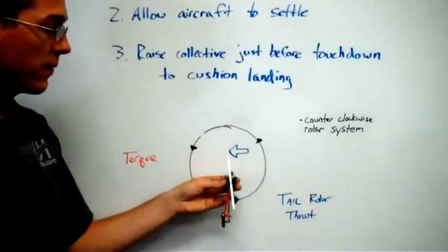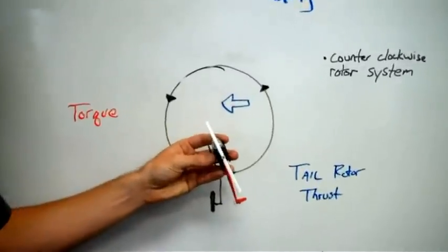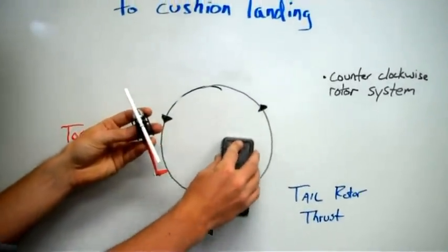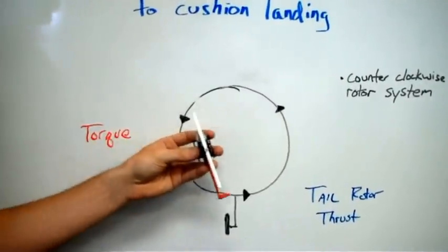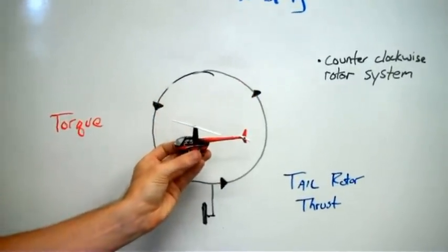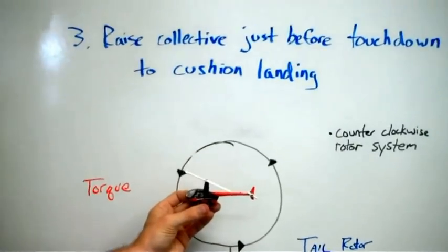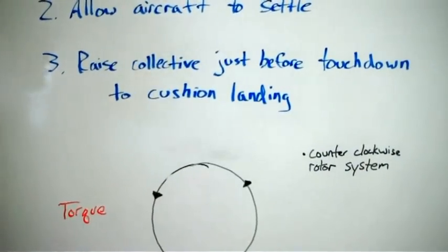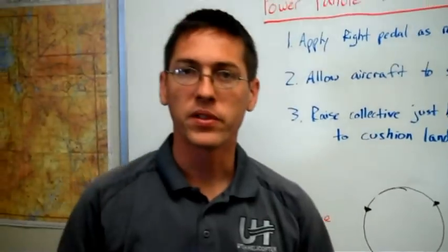So, as soon as that helicopter begins to yaw, the pilot applies right pedal, which is eliminating the tail rotor thrust to level the aircraft again. At that point, the aircraft will then begin to settle towards the ground. He then raises the collective to cushion the landing and the hover auto has been a success.